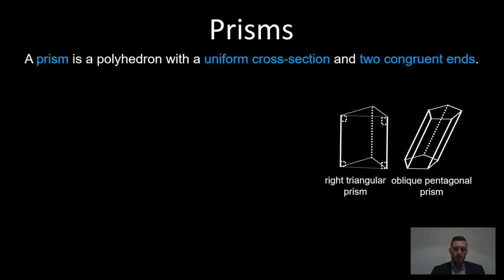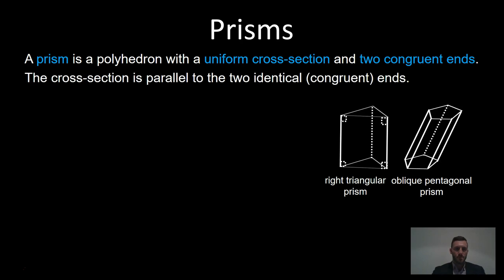A prism is a polyhedron with a uniform cross section and two congruent ends. In our two examples here, the left one has a triangle end, hence triangular prism, and the one on the right has pentagon ends, so therefore pentagonal prism. The cross section is parallel to the two identical ends; in this case it runs horizontally through the two prisms, so that's our uniform cross section.